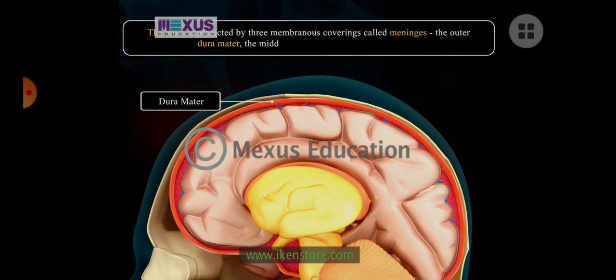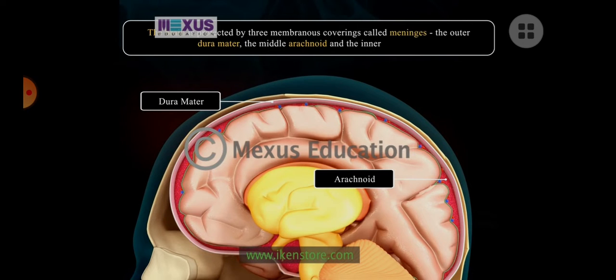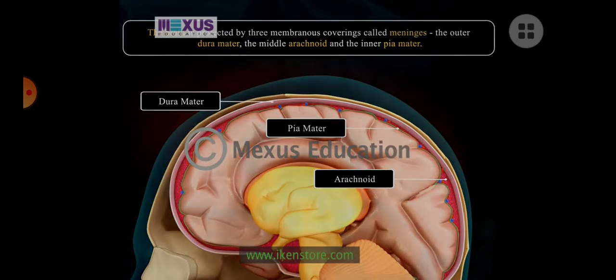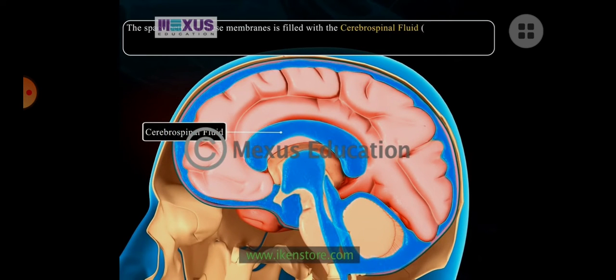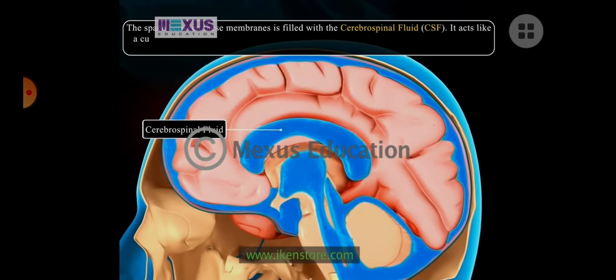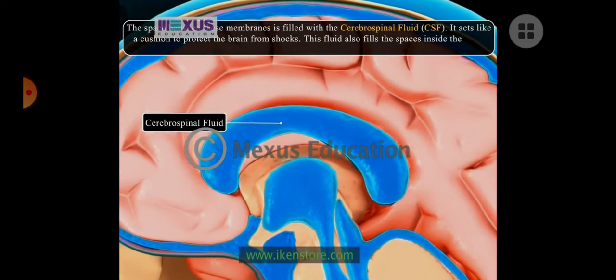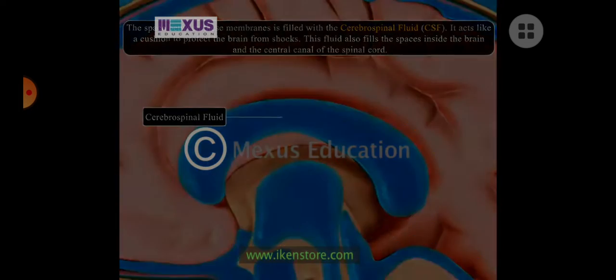So the uppermost is dura mater. Then you have arachnoid mater. And after arachnoid, it is the pia mater. Between arachnoid and pia, you have a fluid called as CSF, extracellular fluid secreted by choroid plexus. Choroid plexus will be taught to you. Don't worry about it. So cerebrospinal fluid is nothing but the fluid that helps in providing support, protection and acts as a shock absorber into the brain cell. And there is constant pressure that is always maintained by the cerebrospinal fluid. It also helps in exchange of nutrients and helps the brain from not drying out.